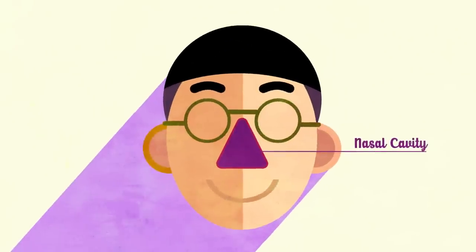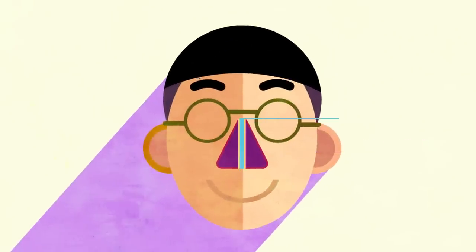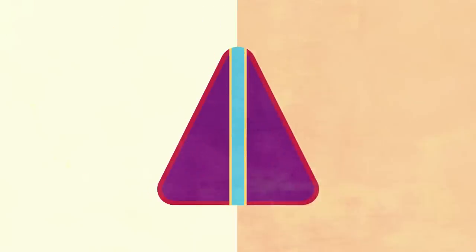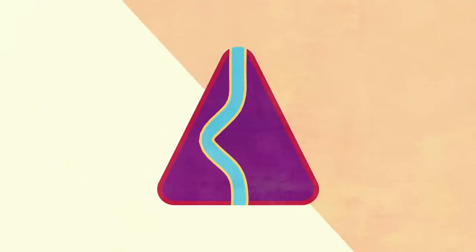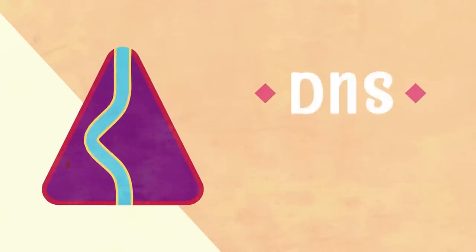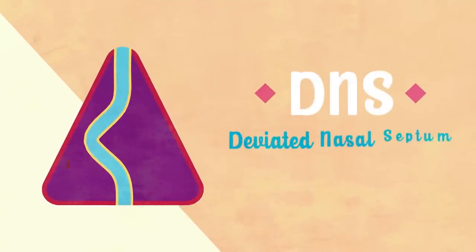The nasal cavity is divided into two by the nasal septum. Problems arise when it is not dividing it symmetrically, leading to a condition known as DNS, or deviated nasal septum.